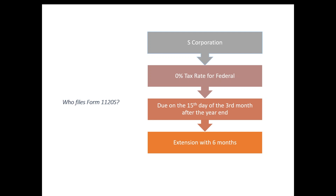If you don't have enough time to file the S Corporation tax return Form 1120S by March 15th every year, you can file Form 7004 as an extension to file the tax return for six months. In most cases the S Corporation will not have income tax. Under certain special circumstances, if the company used to be a C Corporation and changed to an S Corporation, there may be built-in gain tax. Those are special cases.